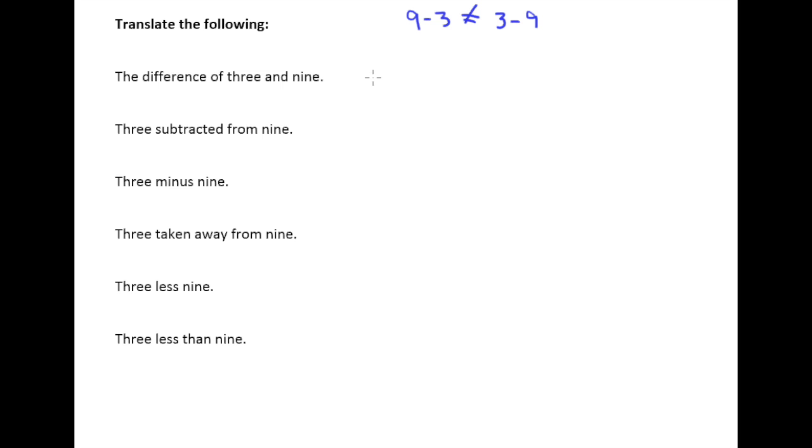The next example says "3 subtracted from 9." That's actually going to be the opposite order of the previous one. We're actually going to say 9 minus 3. Now why is that? It's telling us to take 3 subtracted from 9. Well, if you're going to subtract from 9, the 9 has to be there in the first place.